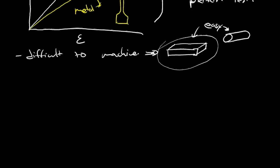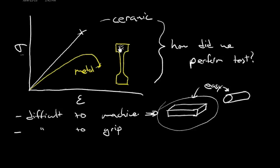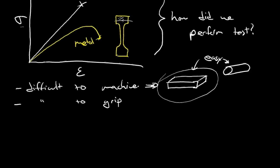But you pick a simple shape. And another thing is, it's actually difficult to grip. You know, you've got to put a substantial force onto this sample, and you do that with a ceramic, and you tend to crush the ceramic. It cracks and crumbles.